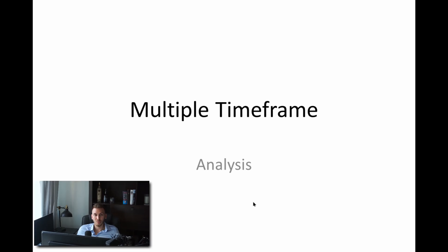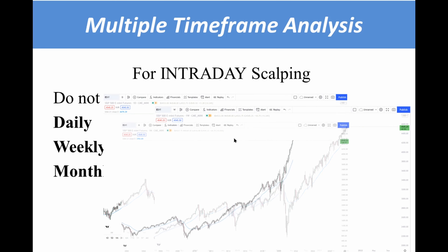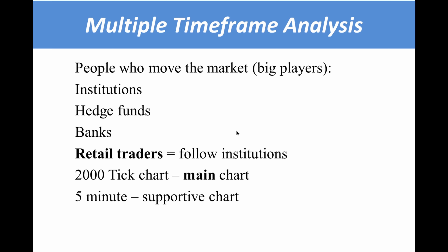I've been getting a lot of questions about how to use multiple time frames to identify whether a trade is going to be good or bad. For intraday scalping we do not use daily, weekly, or monthly time frames — these are too far apart. The big players, the institutions and hedge funds, are the ones who move the market. We need to follow their footprints, which is why our main chart is the 2000 tick chart and the supportive chart is the five minute chart.